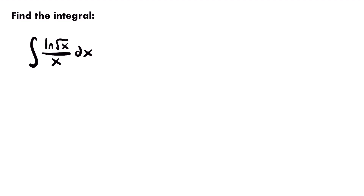However, in order for u-substitution to work, the derivative of that inside function must also be found in the integral. So is that the case here? Let's see what happens if we set u equal to the square root of x and take its derivative, and check whether we can find it in our integral.